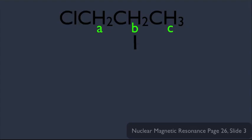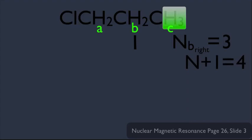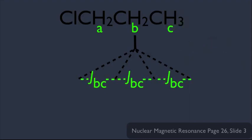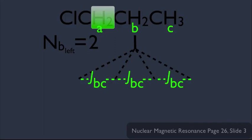Let's calculate the n value on the right side of B. There are three C hydrogens there, so n equals 3, and the n+1 rule gives 4 — the C hydrogens split B into a quartet. The distances are labeled JBC. Now on the left side, there are two A hydrogens, so n equals 2, and n+1 equals 3. Each of the four signals is split again into triplets, with distances labeled JBA.